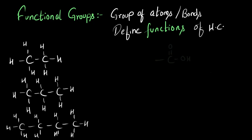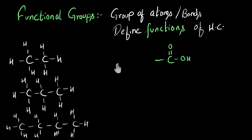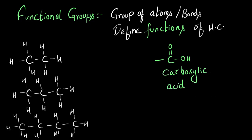For example, consider one group of atoms: C double bond with oxygen, single bond with OH, and this is an empty space where different hydrocarbons can get attached. This group of atoms is called the carboxylic acid functional group — it's called acid because the molecule it gets attached to will now behave like an acid. When mixed with water, it will release H+ ions. That's how acids are defined.